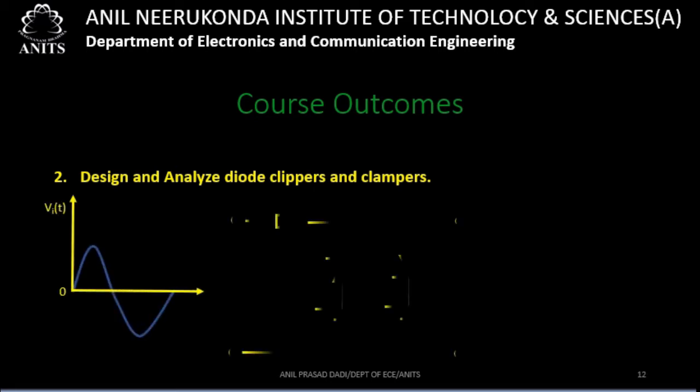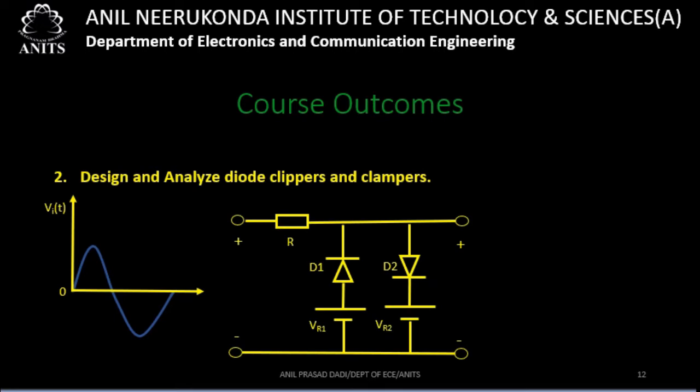Analysis means a circuit and an input signal are given, and you have to find what output the circuit will produce. Finding the output when circuit details and input signal are given is analysis. So analysis is nothing but finding the output signal, which may look a certain way when passed through this kind of circuit — we will see later how it will be.